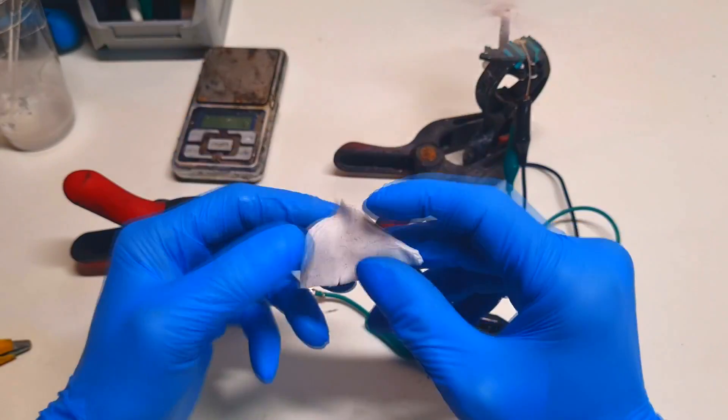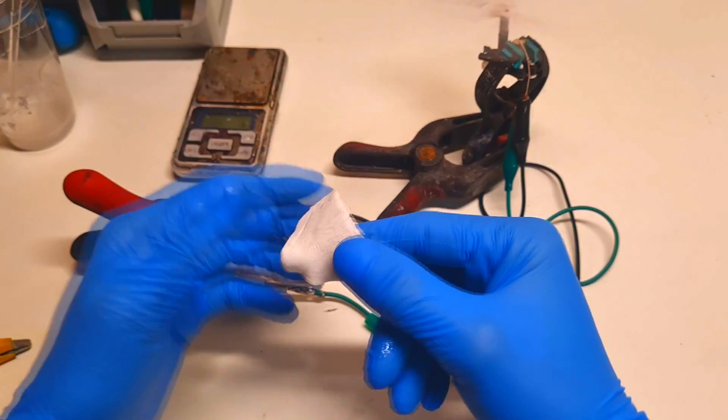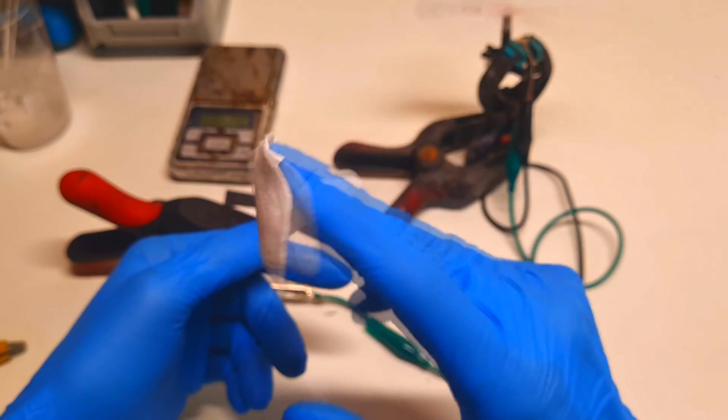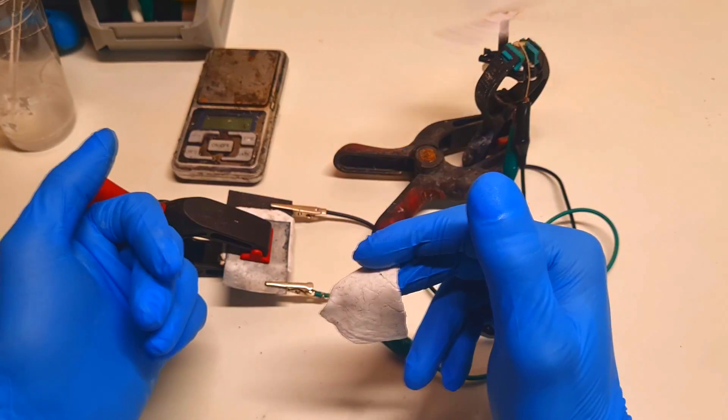So guys, that's how to make this polymer gel electrolyte based on PVA and borax. That's it for now and we see you in the next video.